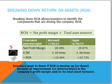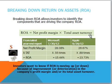First, we'll break down return on assets. Breaking down return on assets allows investors to identify the components that are driving return on assets. Return on assets is equal to the net profit margin times the total asset turnover.